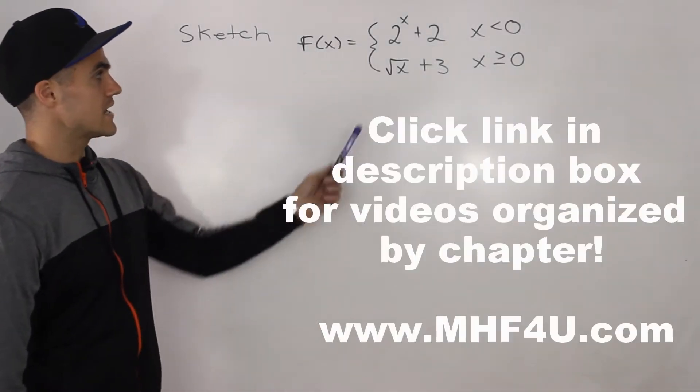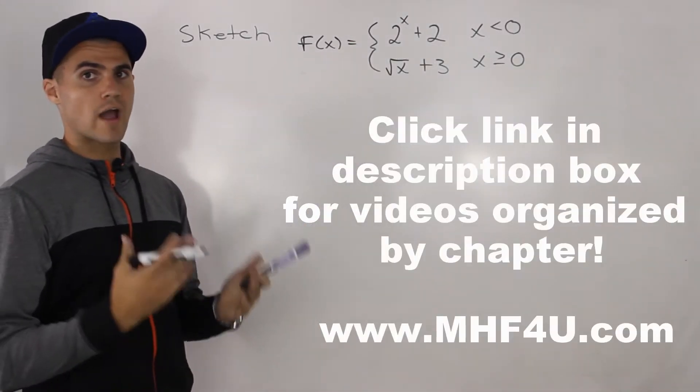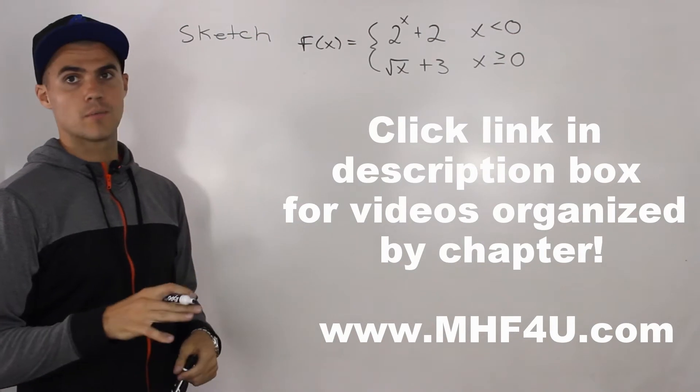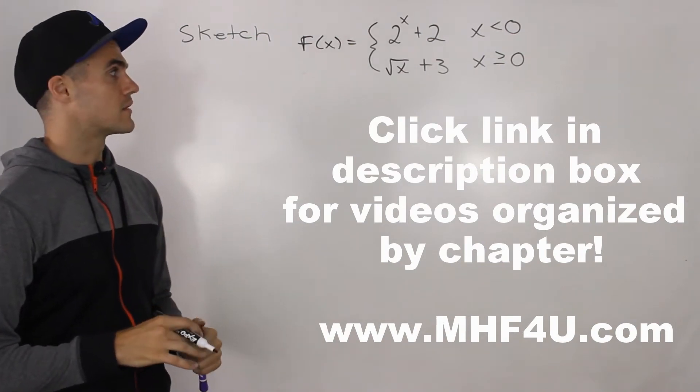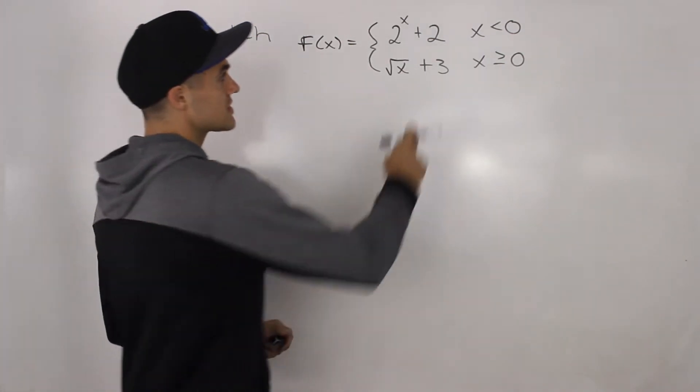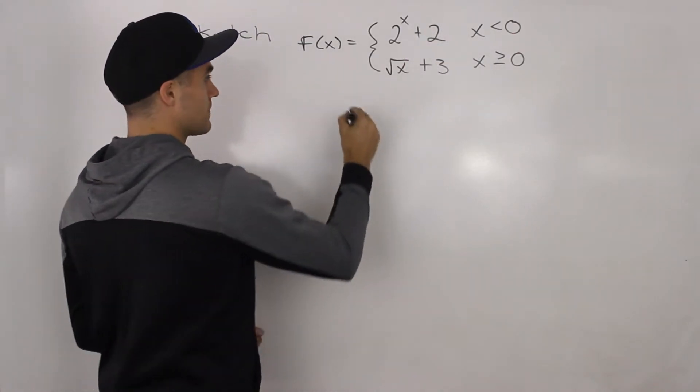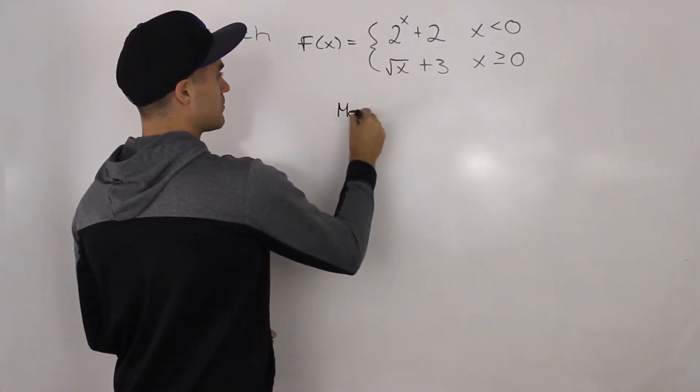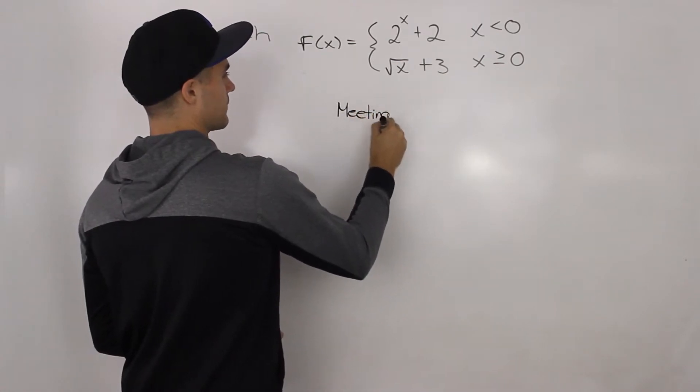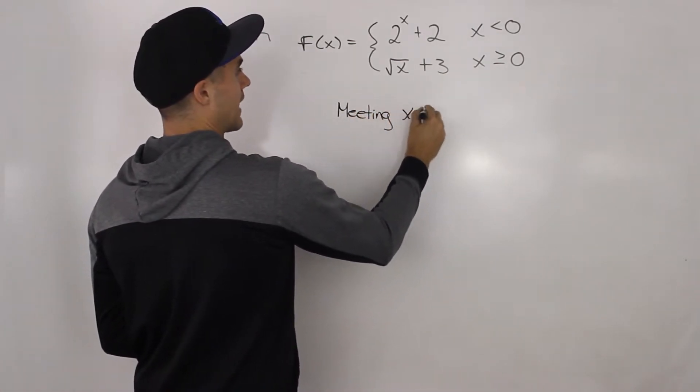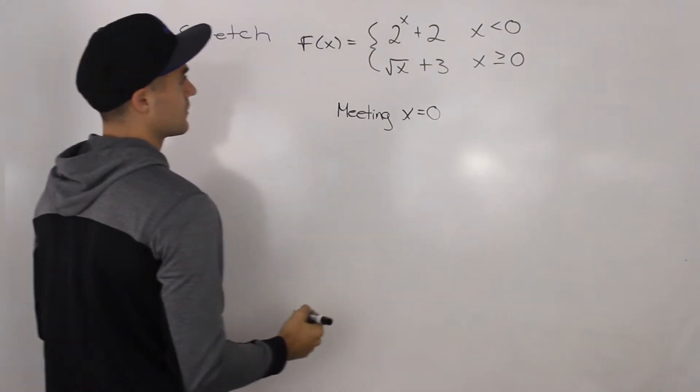In this question, we're going to take this piecewise function, graph it, and then comment on the continuity of it. Notice how there's only two legs, two pieces for this function, and the meeting point is at x is equal to zero.